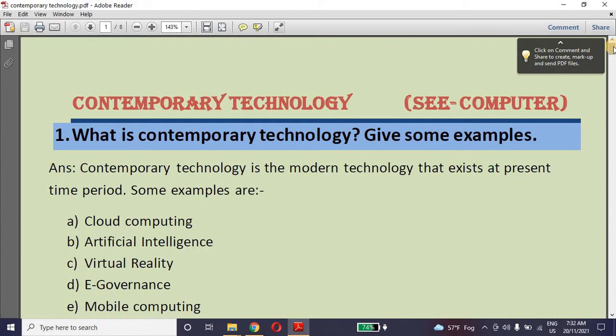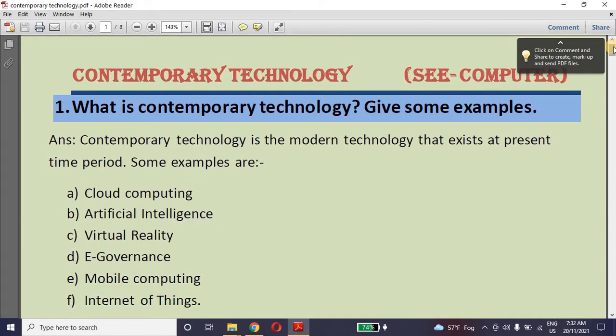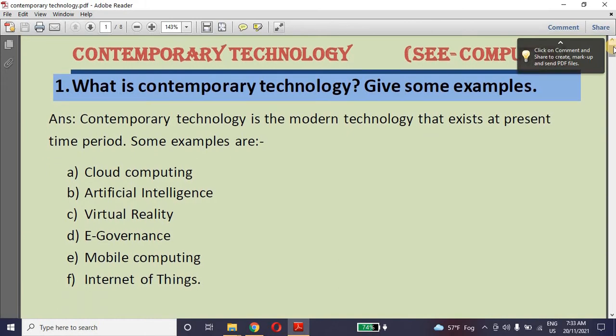First question is the definition of contemporary technology and some examples. Contemporary technology is nothing but modern technology which we are getting in today's generation, in present time. Whatever new technology we are getting, that is called contemporary technology. Here are some examples: cloud computing, artificial intelligence, virtual reality, e-governance, mobile computing, and internet of things.